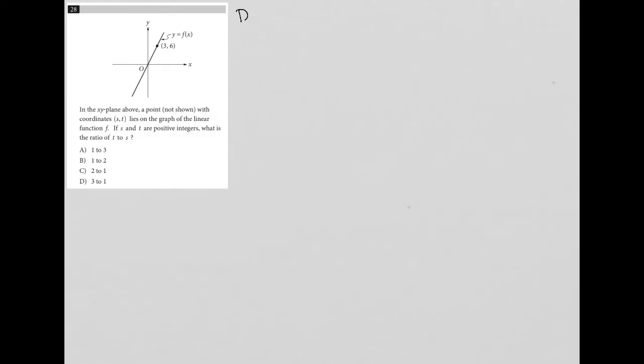So this question is a diagram question, specifically a graph question. I love to pay attention to any points that are provided. Even this one that's not listed goes through the origin, so I know we have the point (0,0), and we have the point (3,6).